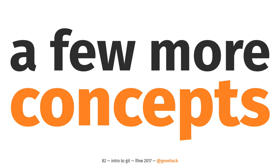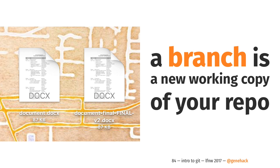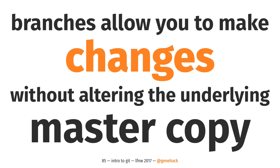Git has this notion of branches. A branch is just a new working copy or repository. Going back to the track changes analogy: this is Git branching. If you're collaborating with somebody in a Word file, you have document.x, and then a couple of days later you're going to have document.final.final.v2 — this is a branch. You just make a new copy to put your changes in. The point of branches is they allow you to make changes to your repository without altering that underlying master copy. It's basically a save point — you can get back to the point where you started.